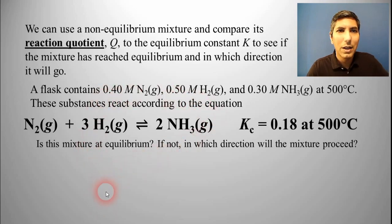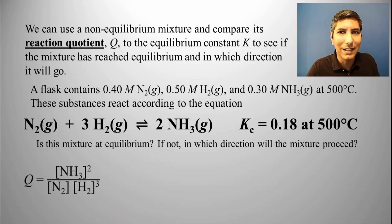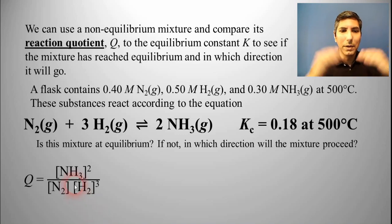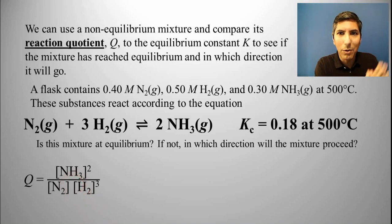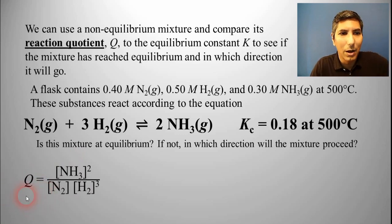The expression for the reaction quotient looks exactly the same as the expression for the equilibrium constant — products over reactants raised to the power of the coefficients — so it looks exactly like the equilibrium constant expression. The only difference is, since we're not sure it's at equilibrium, we can't call it K. We have to call it Q.